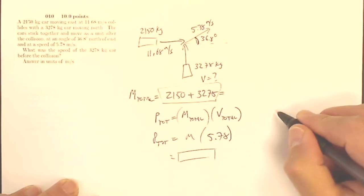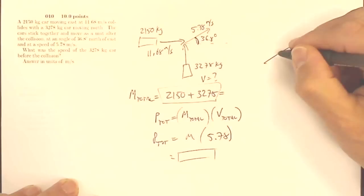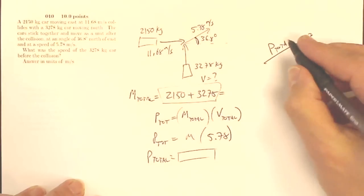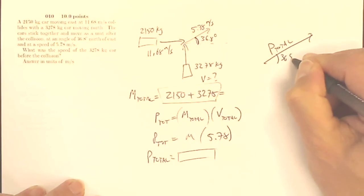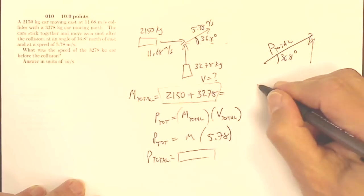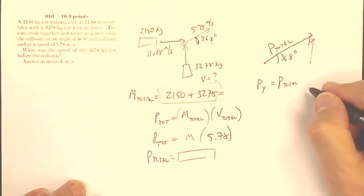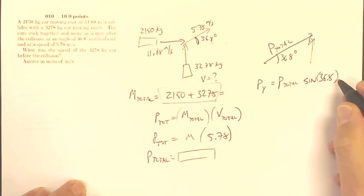Well, that momentum is at an angle. So this is P total. That's at an angle of 36.8 degrees. Well, if I want my Y component of that, then my momentum in the Y direction is going to be my P total times the sine of 36.8 degrees, because that's an opposite and the sine has to do an opposite. So that will give me my momentum in the Y direction.